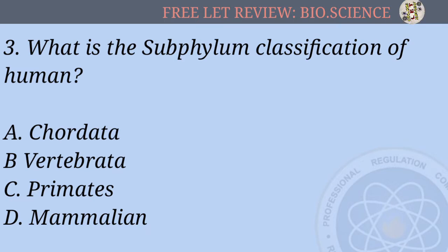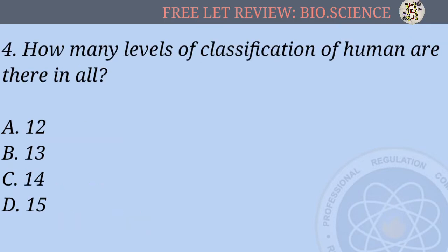Number 4: How many levels of classification of humans are there in all? A) 12, B) 13, C) 14, D) 15.